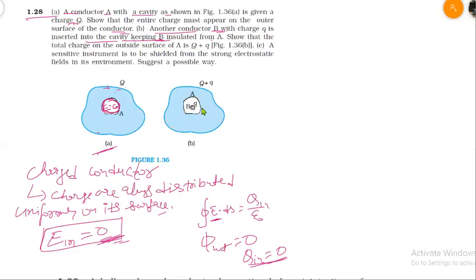Now we have conductor B with charge Q inside the cavity. This creates an internal surface. We have a charge in this cavity, so what happens here?